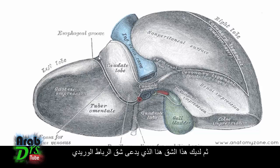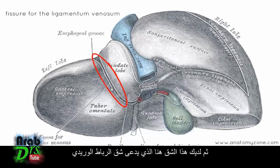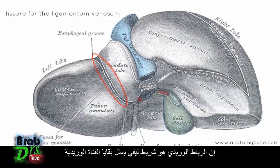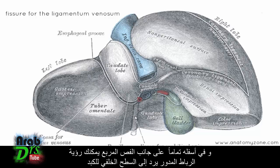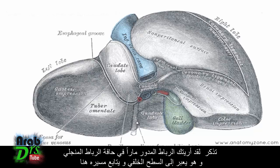There's a fissure here called the fissure for the ligamentum venosum. The ligamentum venosum is a fibrous remnant of the ductus venosus. Just below it, on the side of the quadrate lobe, you can see where the round ligament comes into the back of the liver. The round ligament passes in the margin of the falciform ligament to the posterior surface and runs along here.